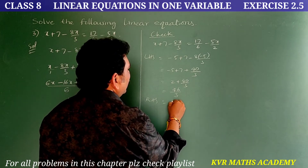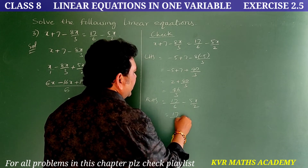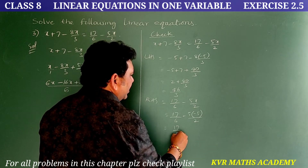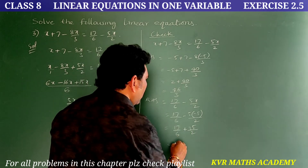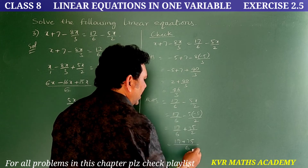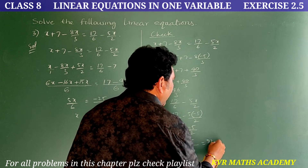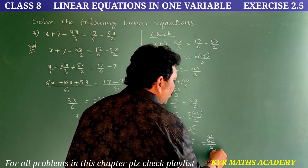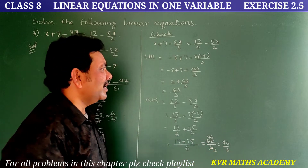RHS = 17/6 - 5×(-5)/2 = 17/6 + 25/2. LCM of 6 and 2 is 6: 17 + 3×25 = 17 + 75 = 92. So RHS = 92/6 = 46/3. Therefore LHS = RHS = 46/3, hence the result is true, for x = -5.